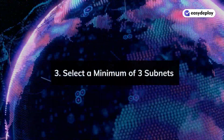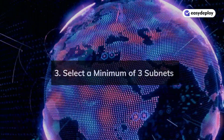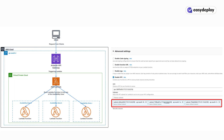In the Lambda creation process, expand the advanced settings and select a minimum of three subnets, each from different availability zones in the VPC. This ensures that the Lambda function is highly available.